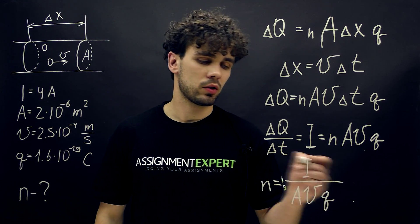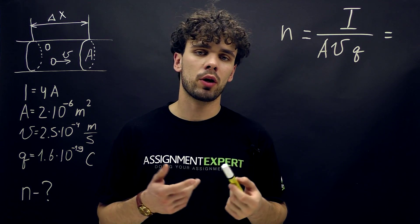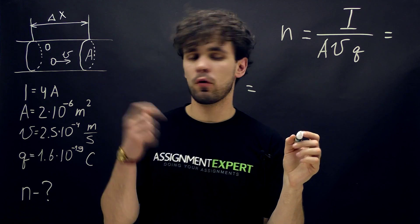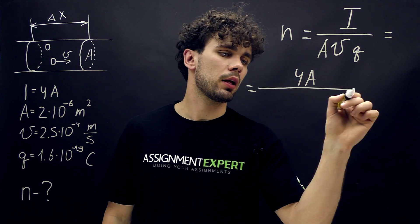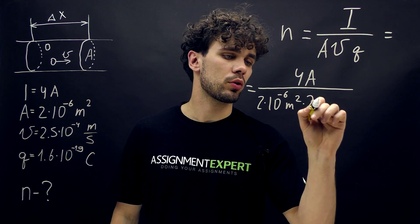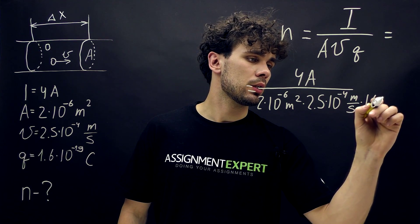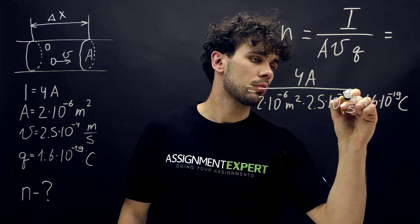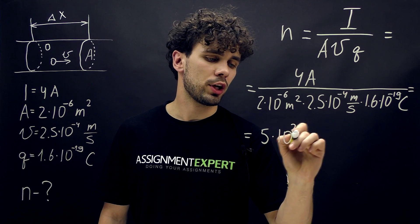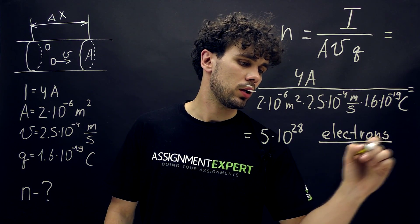Now we just need to put all the values into this formula. Here's the formula we found for the total number of electrons in one unit of volume. In the numerator we have 4 Amperes, and in the denominator we have 2×10⁻⁶ m² times 2.5×10⁻⁴ m/s times 1.6×10⁻¹⁹ Coulombs. This gives us 5×10²⁸ electrons per cubic meter.